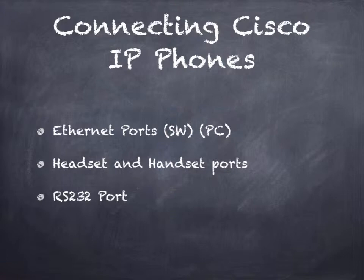First, if we flip the phone over and take a look at the ports on the back, there are some interesting ones to know about. There are typically two Ethernet ports side by side on the back of the phone. One is labeled SW for switch, and the other is labeled PC. This is in fact a small Catalyst Ethernet switch from Cisco with only two ports. The SW port is designed to face towards the network and would plug into a full Cisco switch.